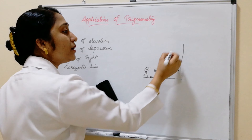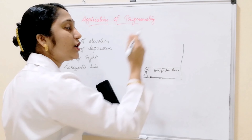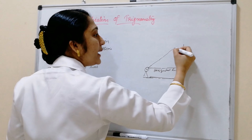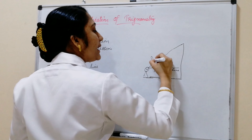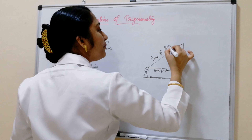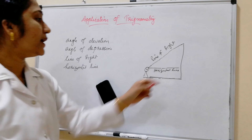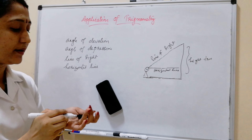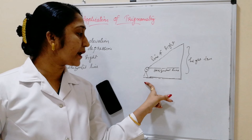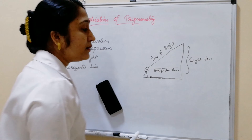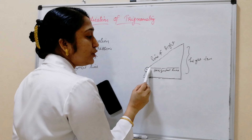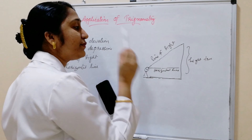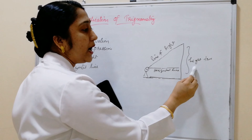The boy is watching the top of the tree — that makes an angle. This line from the eye to the top of the tree is called the line of sight. This is the height of the tree. So if a boy is standing on the ground and a tree is on the other side, the boy's straight vision is the horizontal line, and when watching the top of the tree, that is the line of sight.